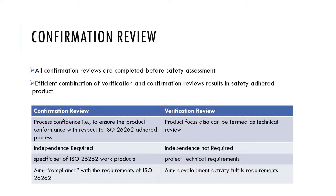Whereas the verification review should cover the technical project requirements. Confirmation review should be independent — meaning there should not be any dependency while conducting the audit. The confirmation review is conducted by the functional safety assessor or a functional safety assurance person who should be competent enough to perform it independently. The verification review does not need to be independent because it is a technical review — some parts of the document may need input from an architect, a developer, or a tester, so there is a dependency.